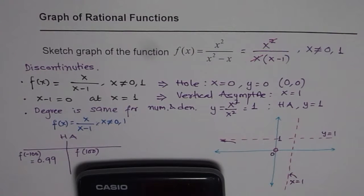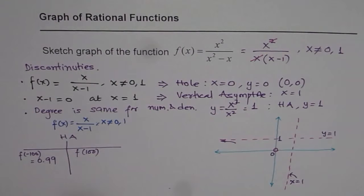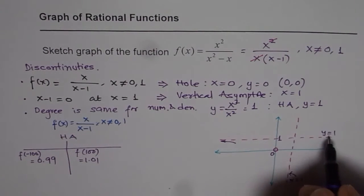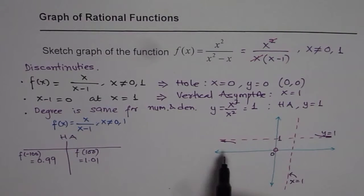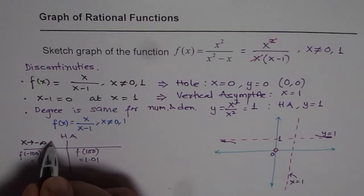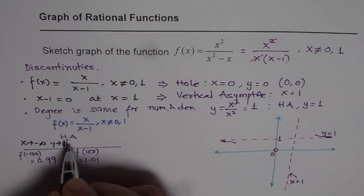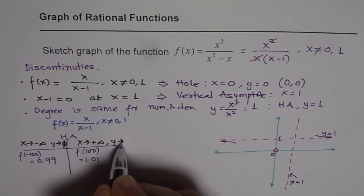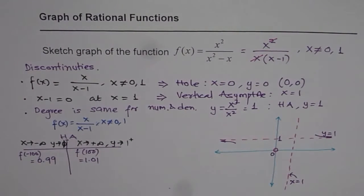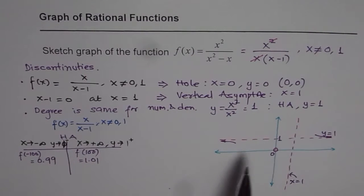Now let's calculate f(100): 100 divided by (100 − 1) = 100 over 99, which is approximately 1.01. That means we are approaching the horizontal asymptote from the positive side as x goes to positive infinity. So the left half of the graph is below the horizontal asymptote and the right half is above it.